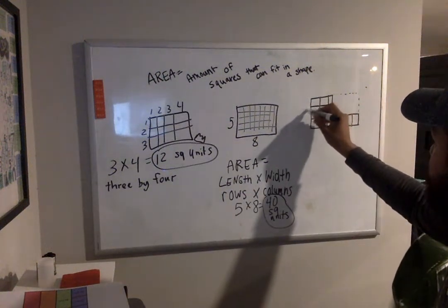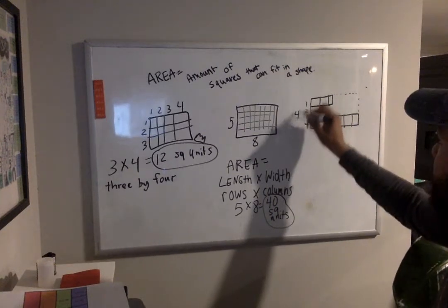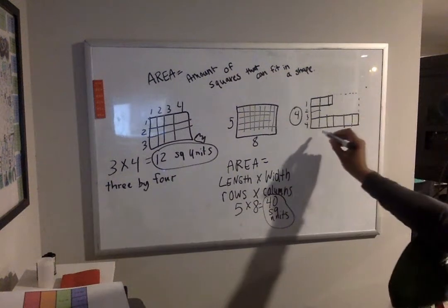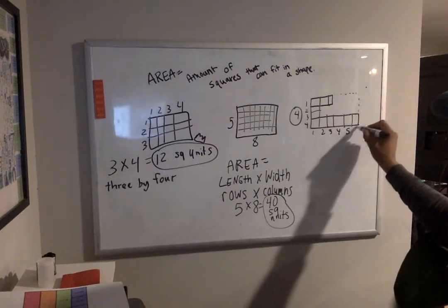One, two, three, four. Length is four. One, two, three, four, five, six. The width is six.